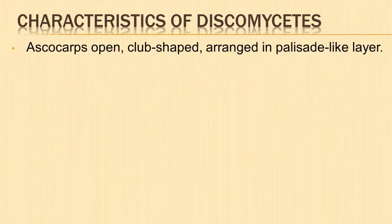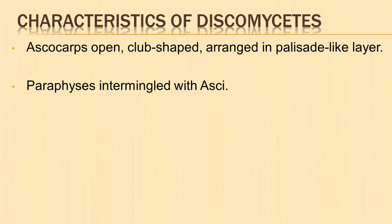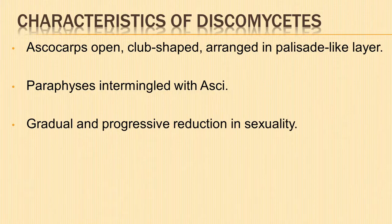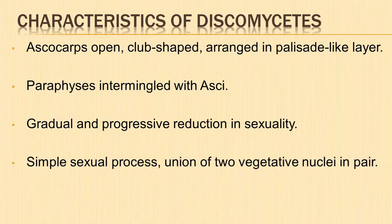The ascocarps are open, club-shaped, arranged in a palisade-like layer on the surface or in open cavities. They show the presence of sterile hyphae called paraphysis, which occur intermingled with the asci. Members of Discomycetes show gradual and progressive reduction in sexuality. The sexual process is simple, showing union of two vegetative nuclei in a pair.